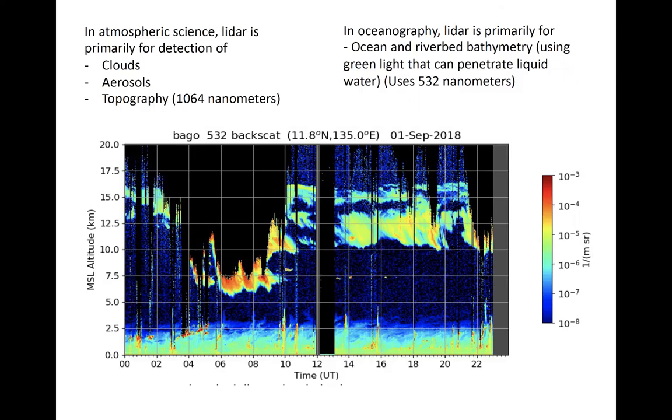An example of backscatter coefficient plotted in microns per steradian on this plot is shown here for a lidar operating at 532 nanometers in the green part of the visible spectrum. Detailed structure is seen in the lowest two and a half kilometers where the backscatter is primarily caused by aerosols, which could be sea salt, dust, smoke particles, or other particles.